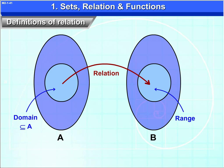Domain is subset of A and range is subset of B. The domain and the range can include every element of A and B or could include just a single element.